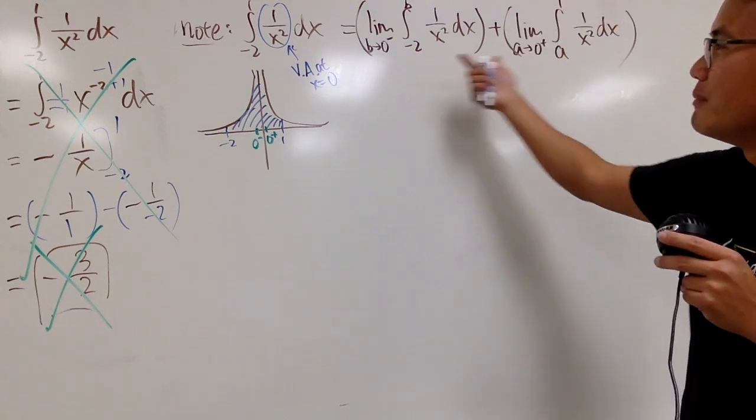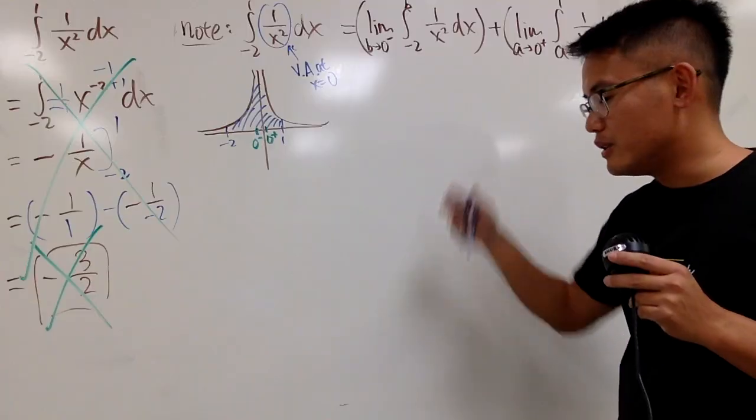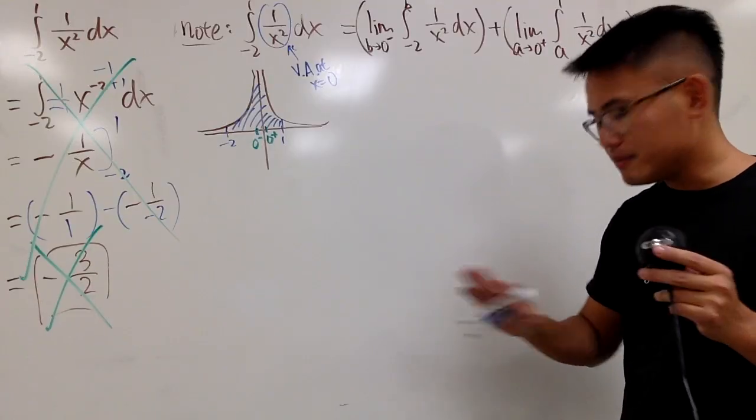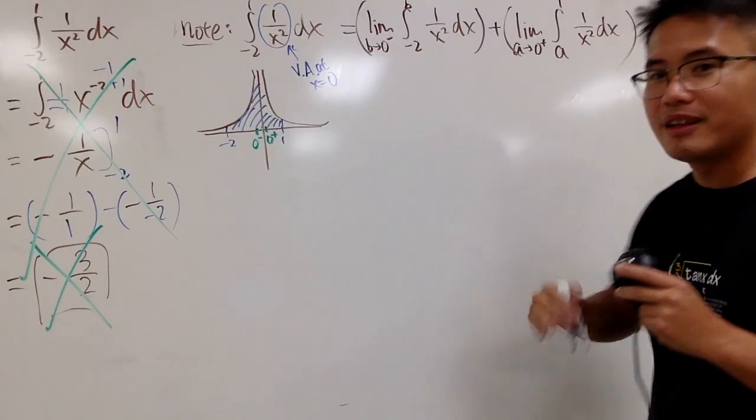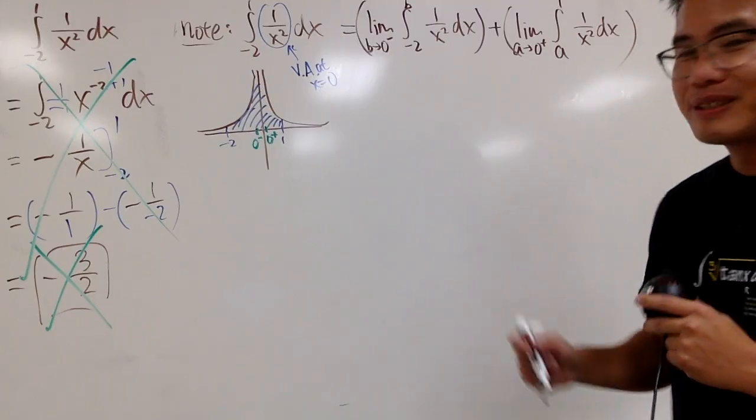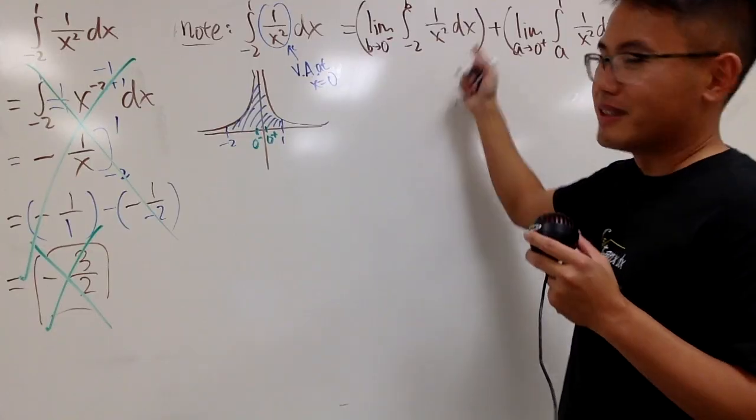If you see one of the limits right here, diverges. You see infinity, or whatsoever. As long as it's not finite, just put down diverge. You don't even have to worry about the other one. You can move on. Okay. So, keep that in mind. Now, let's work this out.